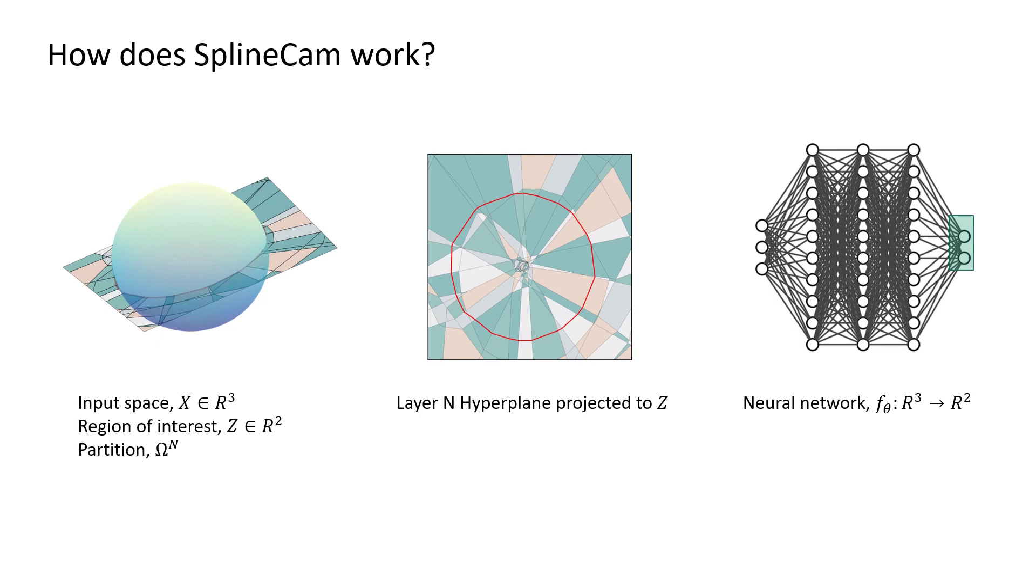To obtain the decision boundary, considering two softmax output neurons, we can use the same method to analytically find the set of points in the input space that makes both outputs equal.